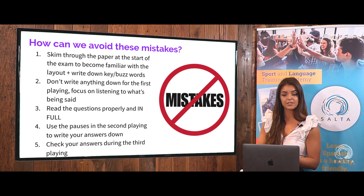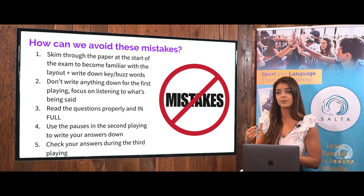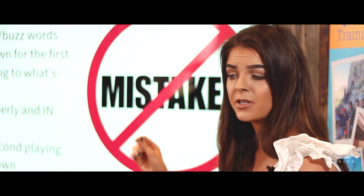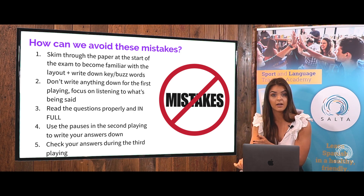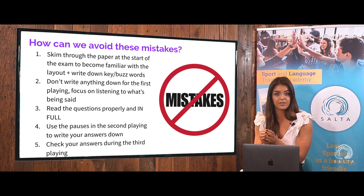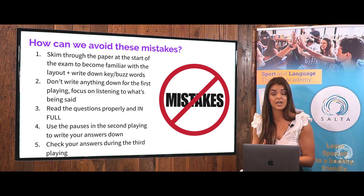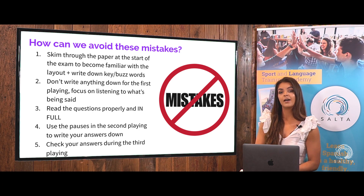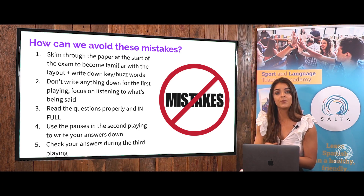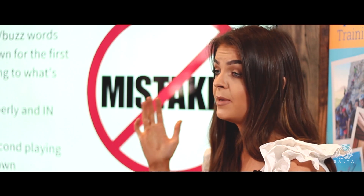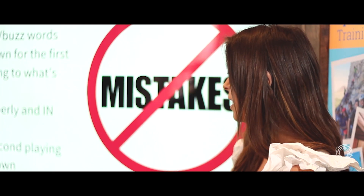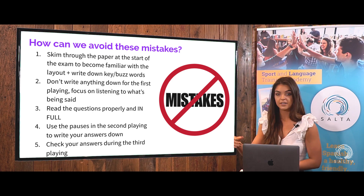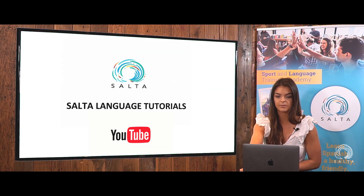So how can we avoid these mistakes? Skim through the paper at the start of the exam, become familiar with the layout and the questions, and write down your buzzwords — days of the week, months of the year, time. The important thing is: do not write anything down for the first playing. Leave your pen on the table and just listen to the tape. The second playing gives you pauses and time to write your answers down — that's when you pick your pen up. The third time, keep your pen in hand but read through your answers as the tape plays to make sure you've answered everything properly. Read the questions in full, use the pauses in the second playing to write, and check your answers during the third playing.